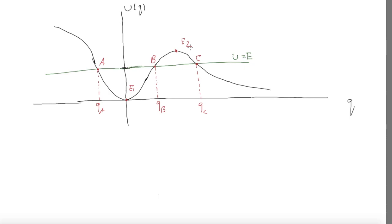Suppose you start your system with this total energy E somewhere between A and B and the system is moving toward QA. It will have kinetic energy and be able to climb up to point A. At that place it will run out of kinetic energy because the potential energy equals the total energy, so kinetic energy T must be zero. But a force is still acting in this direction.